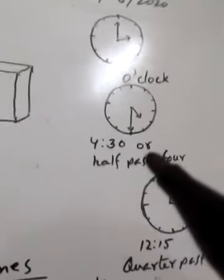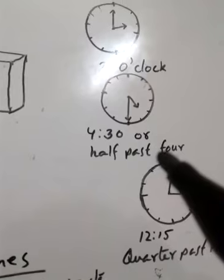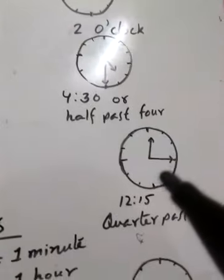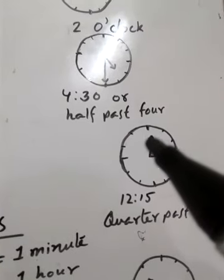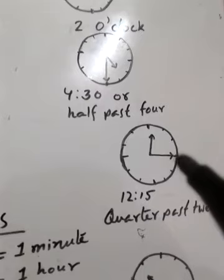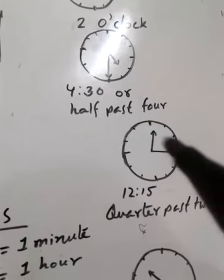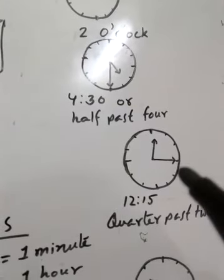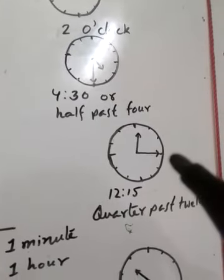2:30 is half past 2. 5:30 is half past 5. 7:30 is half past 7. Now, the short hand is between 2 and 1, and the long hand is on 3 — that is 1:15, or 12 hours 15 minutes. 12:15. 15 minutes we call quarter.